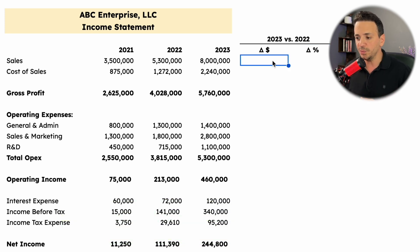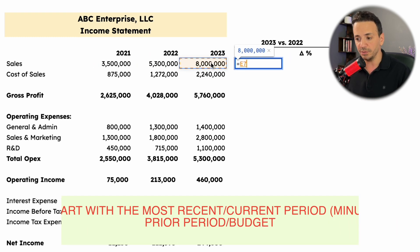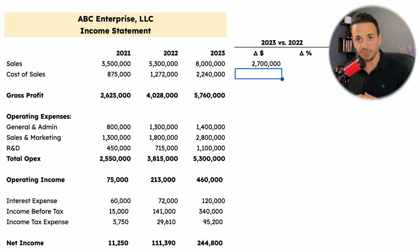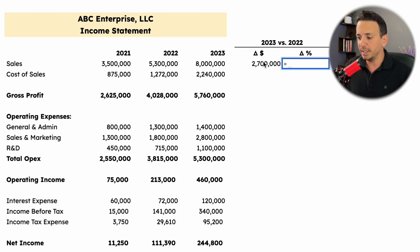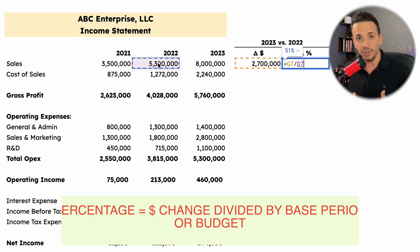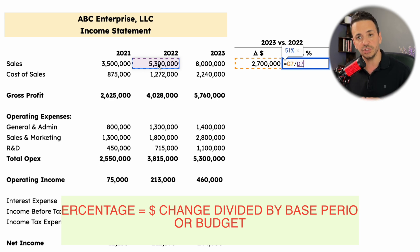When measuring the dollar change, we always start from the most current period: current period minus the previous period. If you're comparing to a forecast, it's the most recent period minus forecast. The percentage change is always the change in dollars divided by your base year — in this case 2022 is the base year we started from. If it's a budget, the starting point is the budget. That formula gives us the percentage increase or decrease.